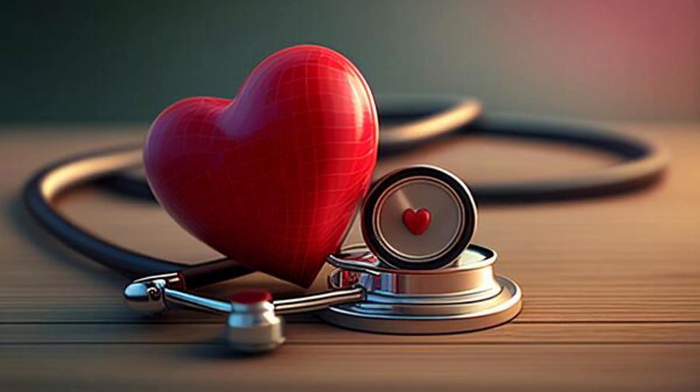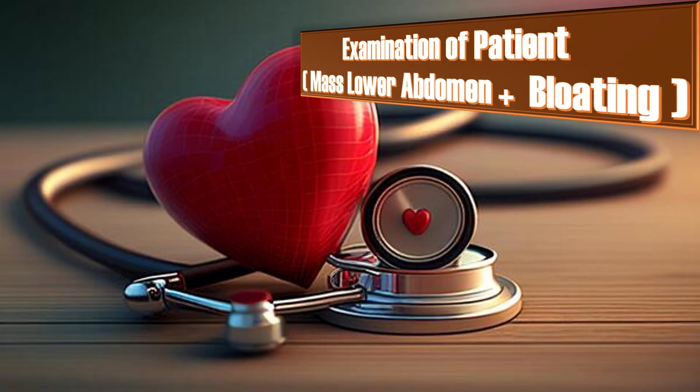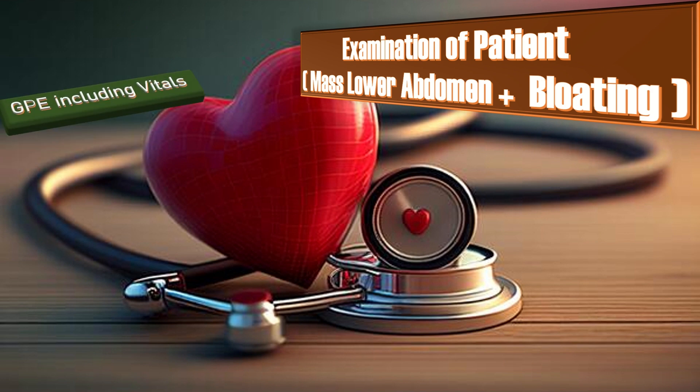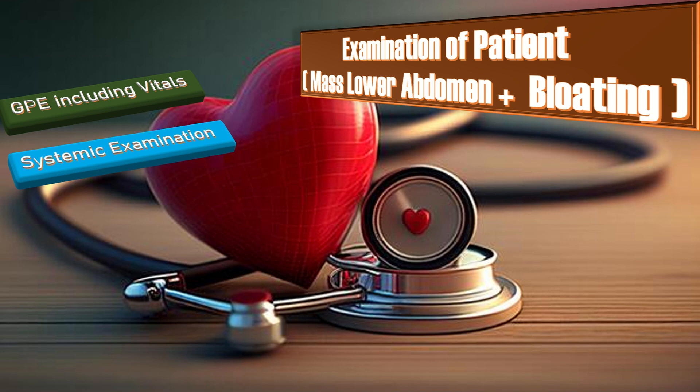After history, we examine the patient. First, general physical examination including vitals. Then systemic examination including breast and chest examination is done. In the per-abdominal examination, first do inspection for any scar marks or visible pulsation, then do appropriate palpation in order to evaluate the mass abdomen.